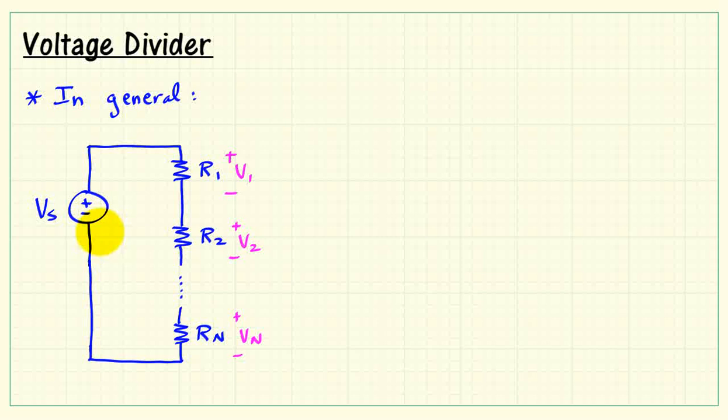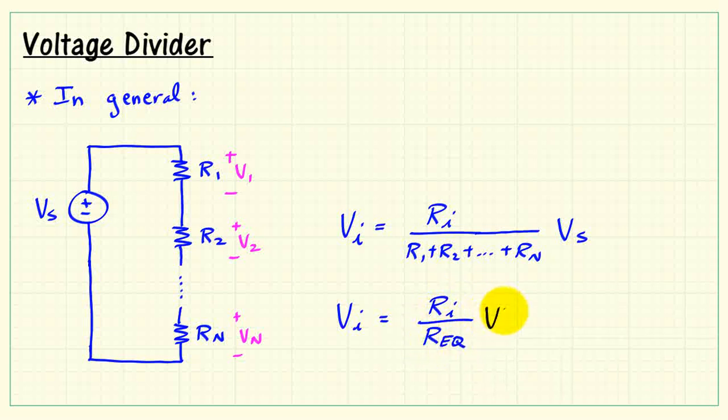Now in general, if we have N resistors connected to the voltage source like this, that means we divide up the voltage into N different voltages. So any particular voltage, say VI, will be the associated resistor RI divided by the sum of all of the series connected resistors. We then take that resistor ratio and multiply it by VS. In a little more compact fashion, we could say that VI equals RI divided by the equivalent resistance connected to the voltage source.